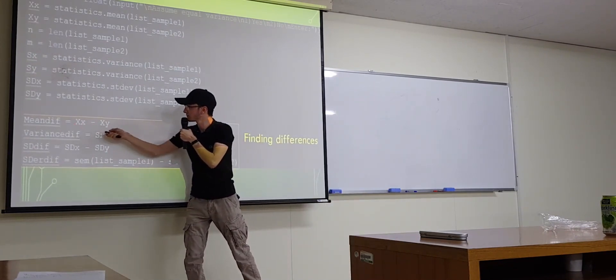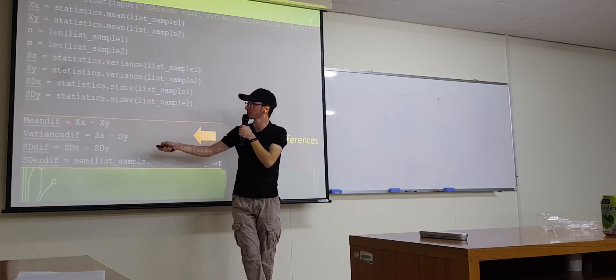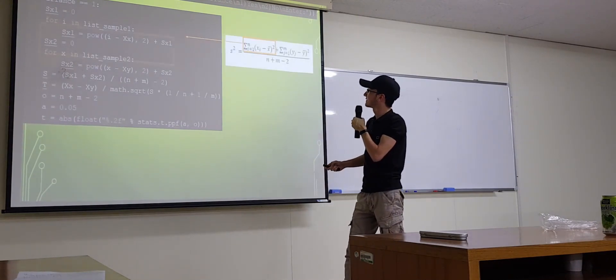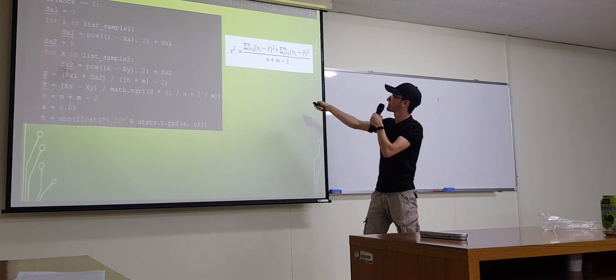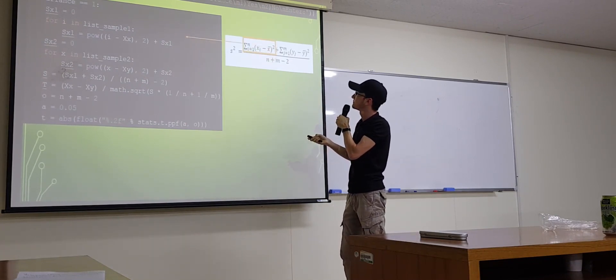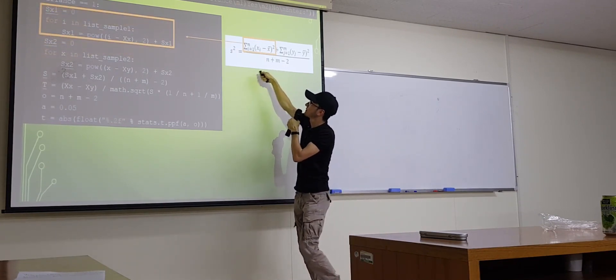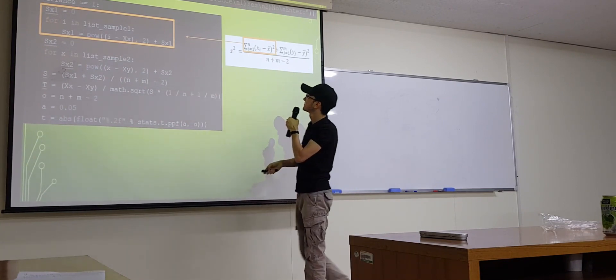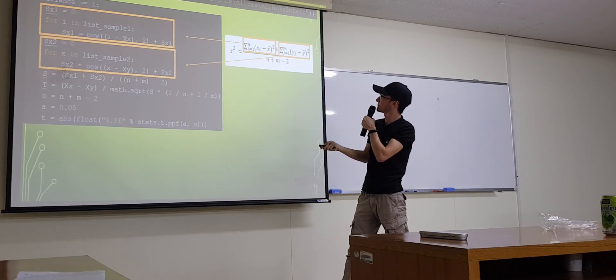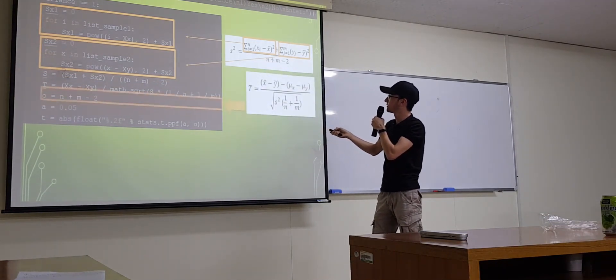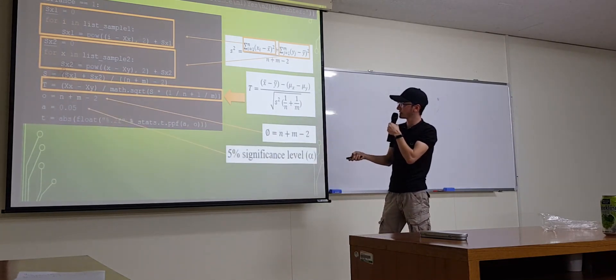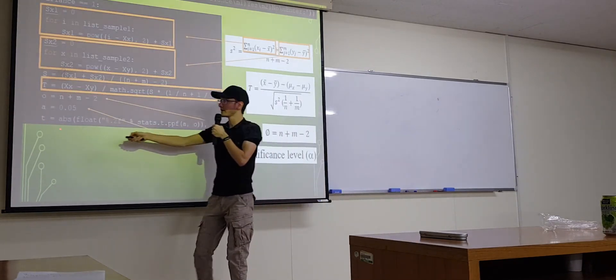And we are just... We have here difference. The result of the difference. This is interesting part. Here we have code. Formula. How we enter it to the Python. First, we calculated this one by using this code. And this one by using this. Yes, this. And we are finding T-value. By using this code. This is degree of freedom. Significance level. This is standard.